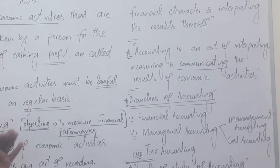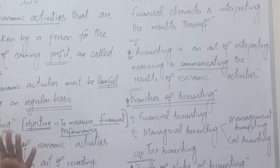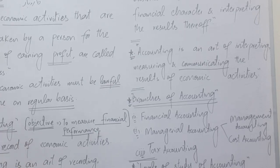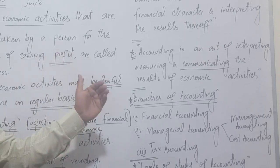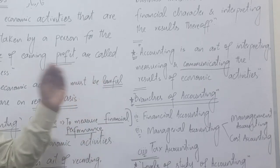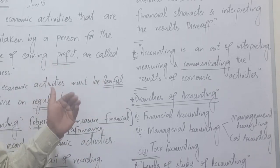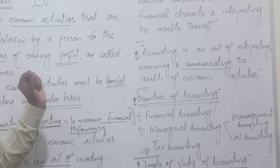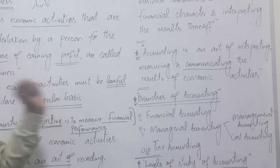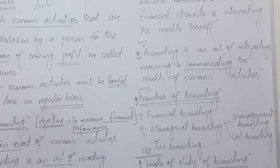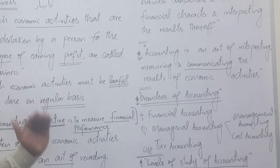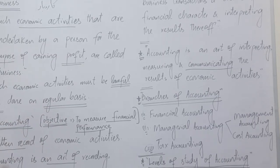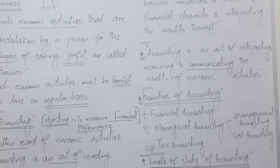So now you should understand that accounting means: you record all the transactions, and you check whether the purpose for which the business was established is being achieved or not. Next — the branches of accounting: financial accounting, managerial accounting, and tax accounting.